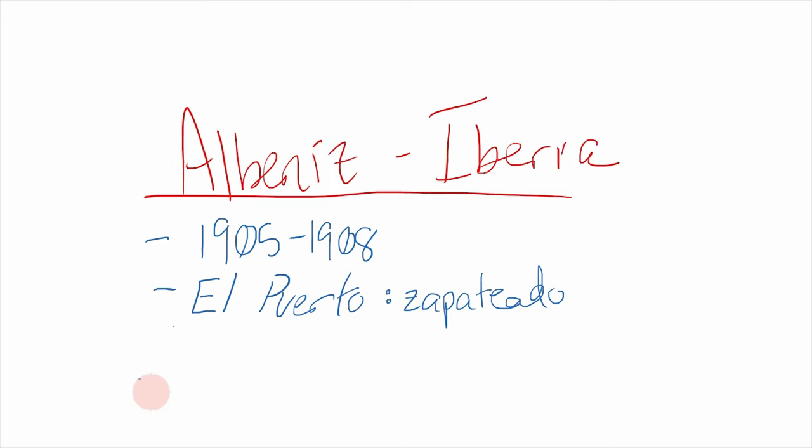I wanted to include this example to show that not all impressionist style music is without a beat or rhythm. This one definitely has rhythmic flair, but you'll also be able to pick out some unusual chords and harmonies in there, especially if you listen to the full version beyond the clip I'm going to show you.